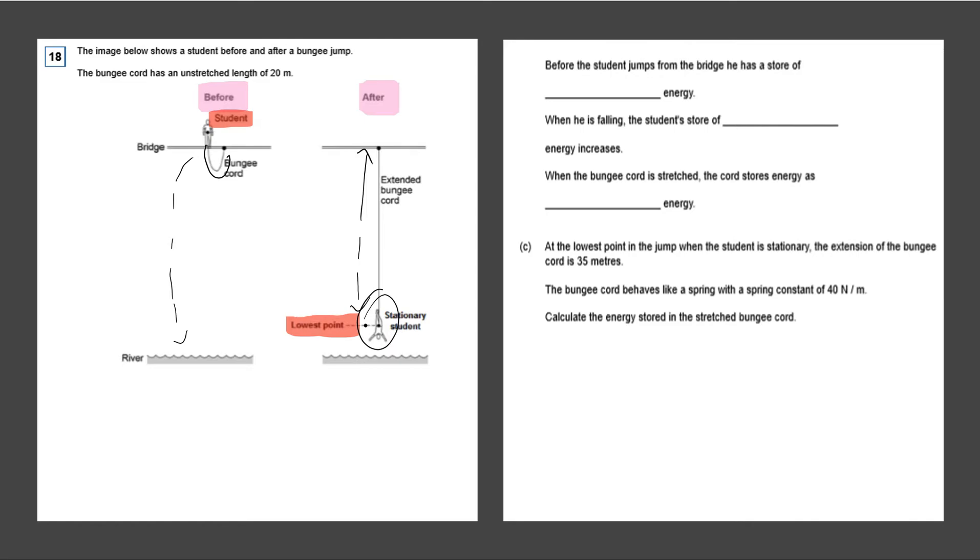So now let's answer these questions. Before the student jumps from the bridge, he has a store of—so remember, he is stable. However, he is not on the floor. He is on a bridge. So he is on higher ground than on the floor. So he is going to have gravitational potential energy.